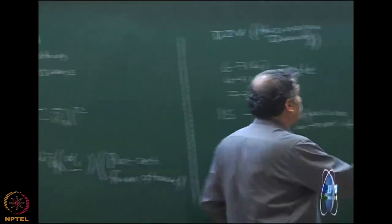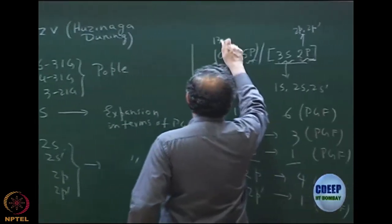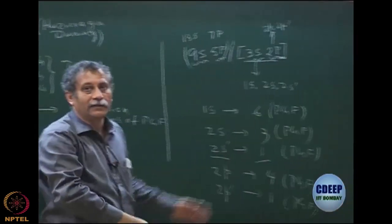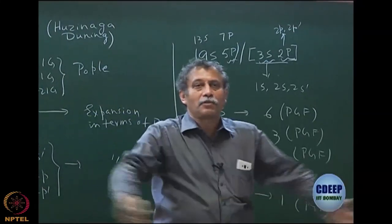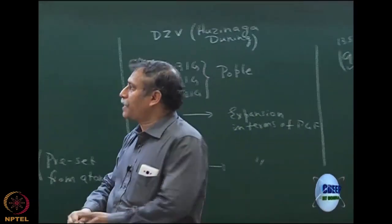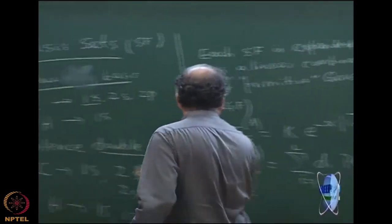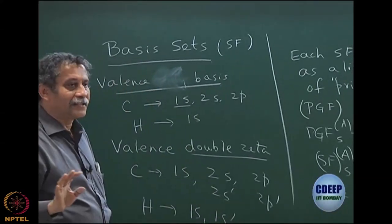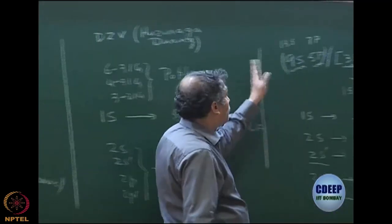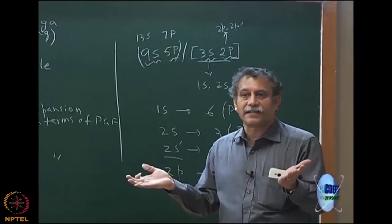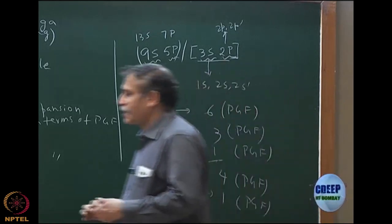There are further basis sets — for example, 7p contracted to 3s, 2p only — and more primitives always means better quality. More is always better in basis sets. The question is computational time increases with more primitives, so you have to play a balancing game. This is the typical Huzinaga-Dunning basis set.